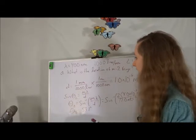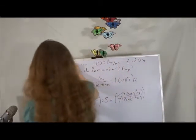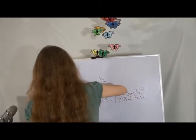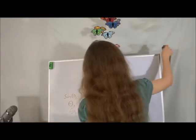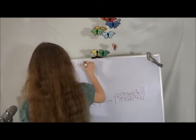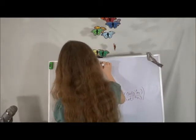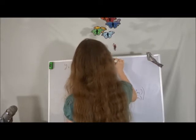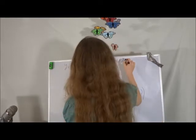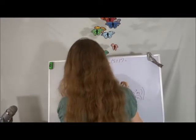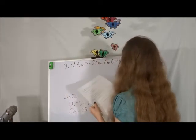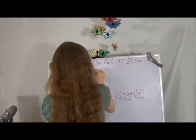Now that we have our angle, we plug it into the L tan theta equation. y_2 equals L tan theta, so that's 2 meters times tangent of 53.1 degrees. Plugging into the calculator, that works out to be about 2.67 meters, or to two significant figures, 2.7 meters.